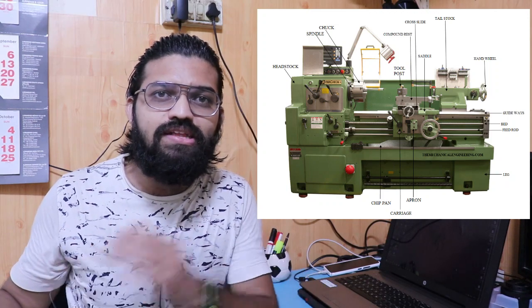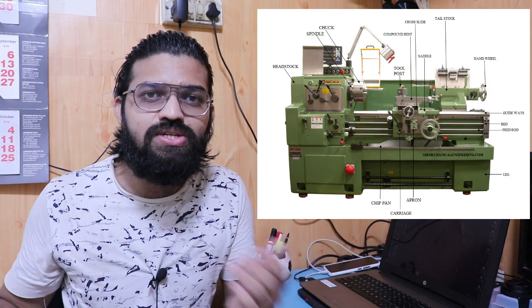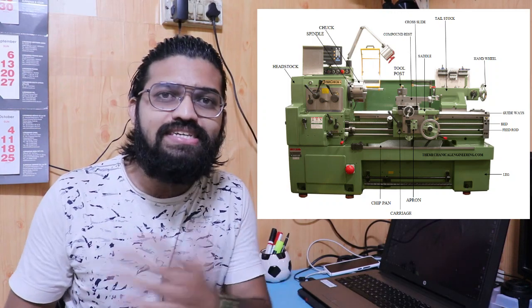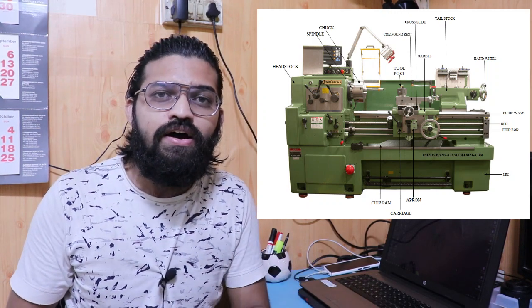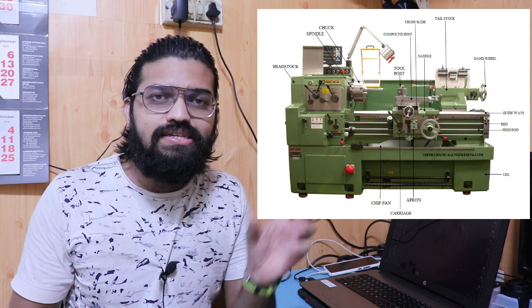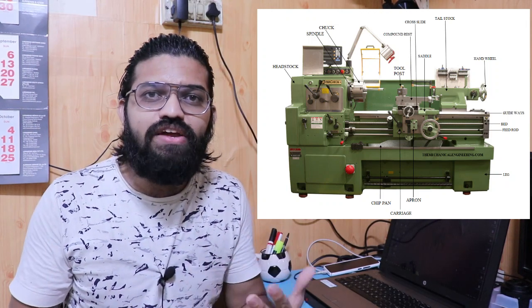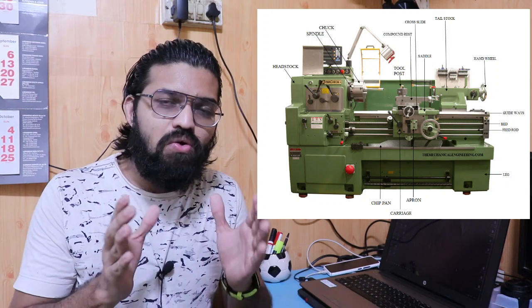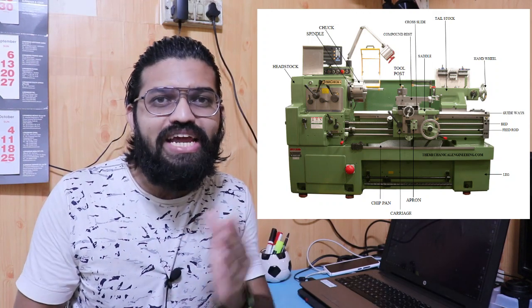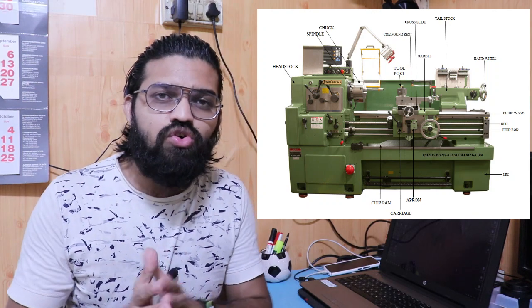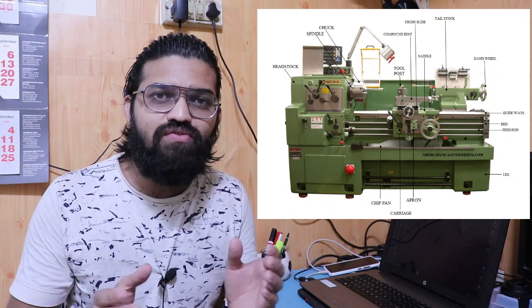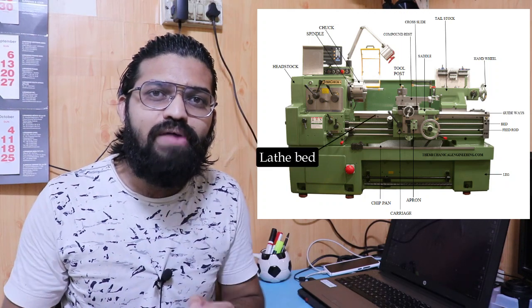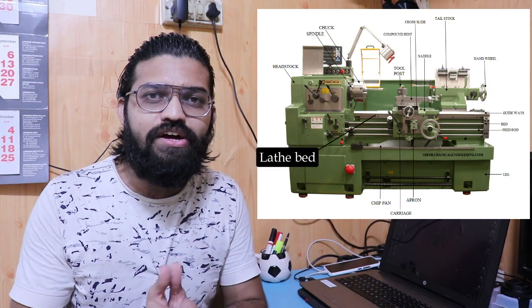In mass production units, you can see higher versions of this type of lathe machine — that can be CNC, i.e., Computer Numerically Controlled lathe machines. But this lathe machine you can spot almost everywhere in every manufacturing industry. Now let's talk about the main parts of the lathe machine.